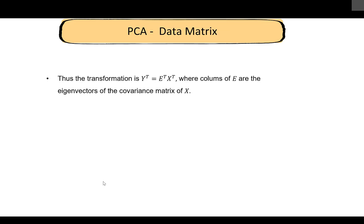To summarize what we do in PCA: the transformation is Y-transpose = E-transpose times X-transpose. Here, E is the matrix whose columns are the eigenvectors of the covariance matrix. In practice, we take a dataset, calculate its covariance matrix, find the eigenvectors to get E, and apply this transformation.